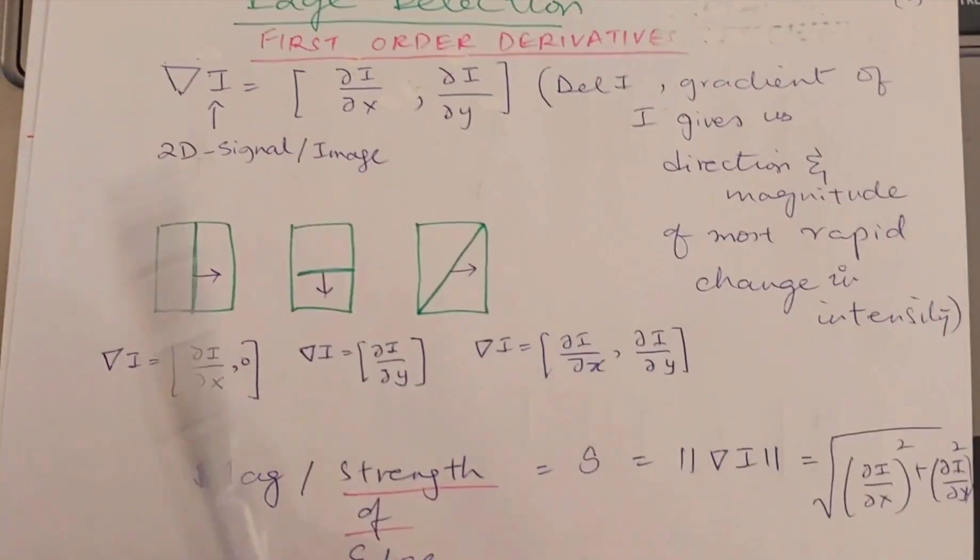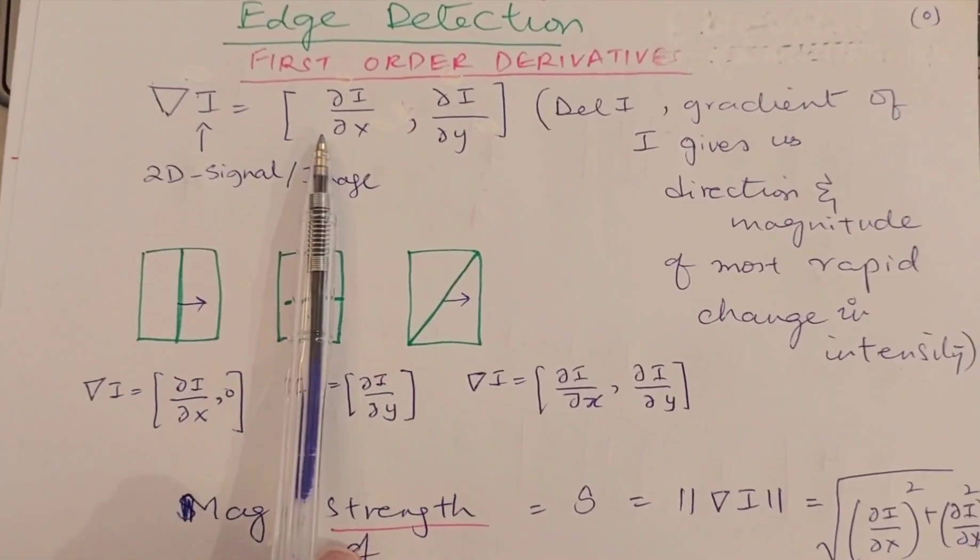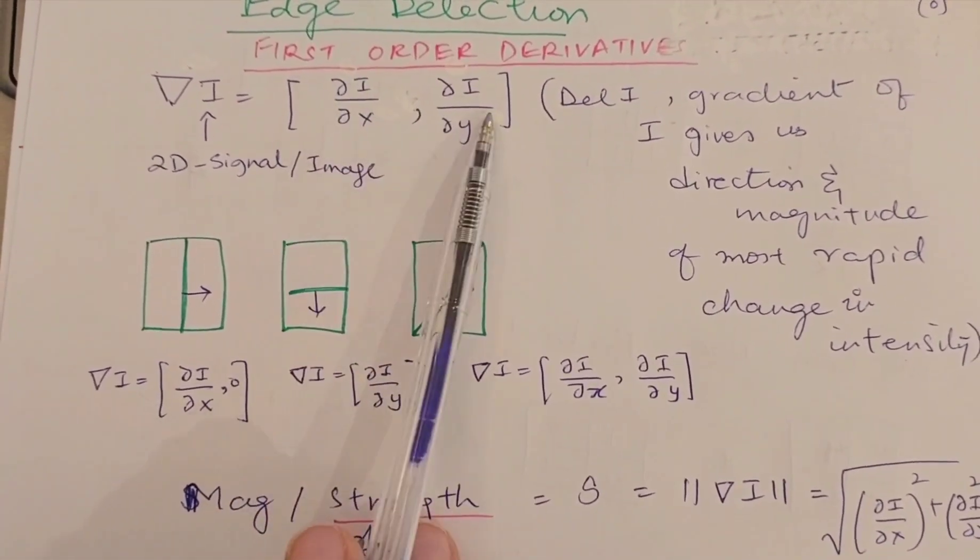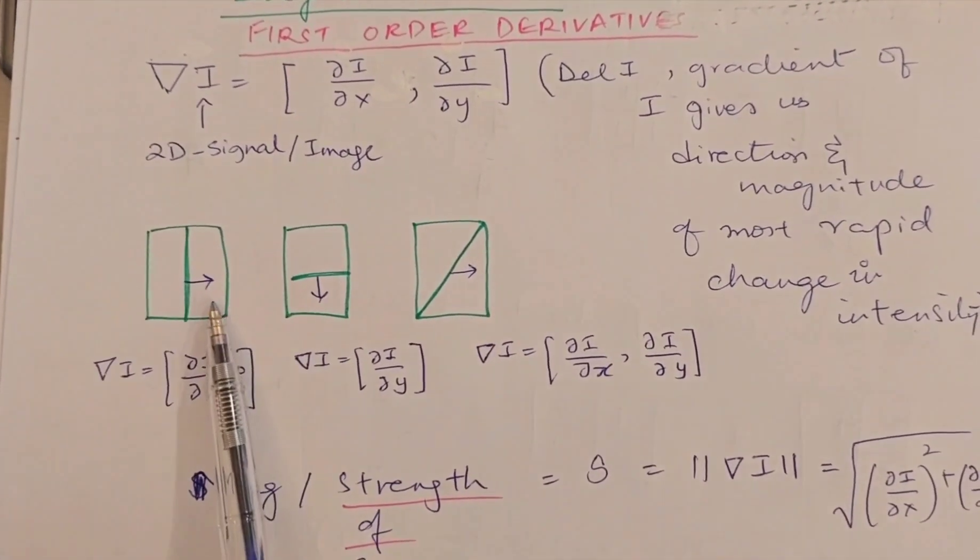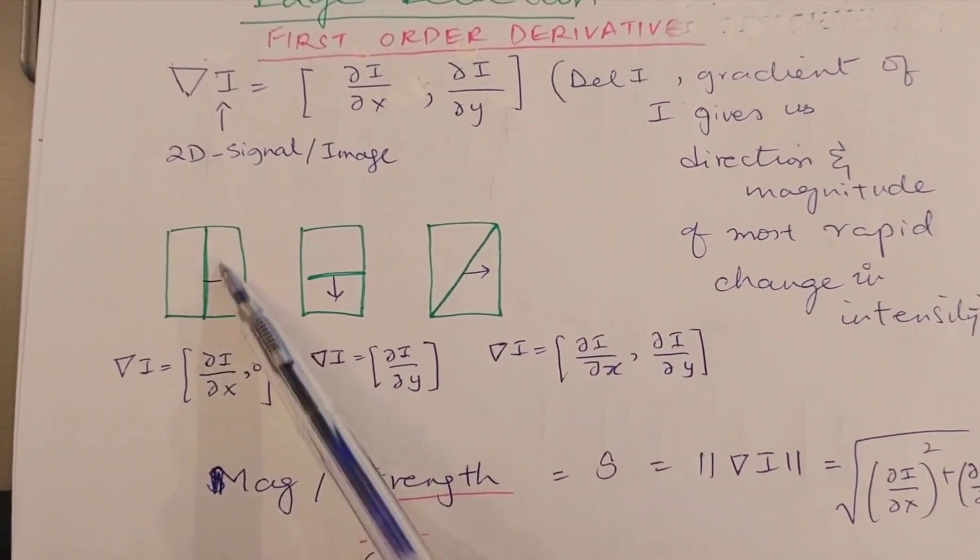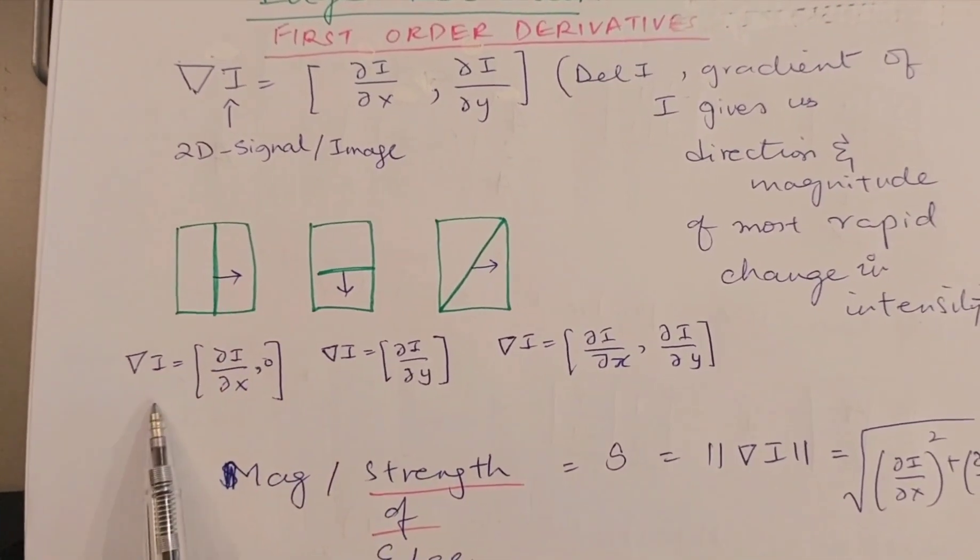For example, if there is an object which has caught these vertical edges, in that case the gradient will only have this component, which is the partial derivative along the x-axis. The other one will be zero.